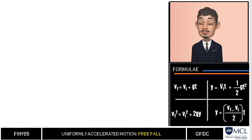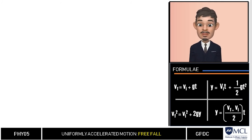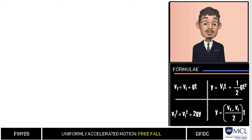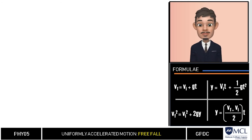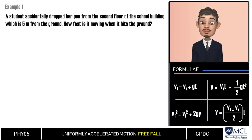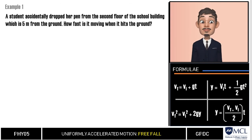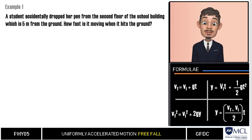Let us have some free-fall problems. In the lower right of this video are the formulas for getting unknown variables. In example number one, a student accidentally dropped her pen from the second floor of the school building, which is five meters from the ground. How fast is it moving when it hits the ground?